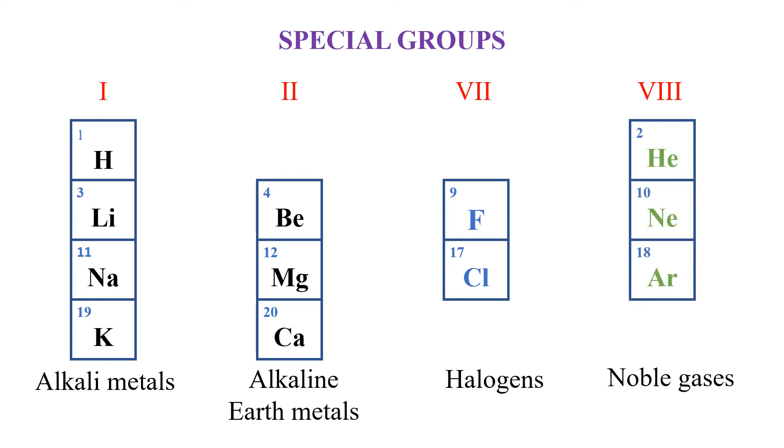When you look at group 8 elements, these are basically monoatomic, meaning they exist as single atoms, and they are relatively inert, they don't tend to react. We have helium, neon, and argon.